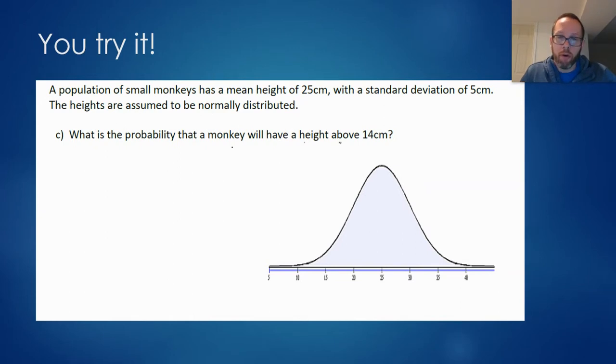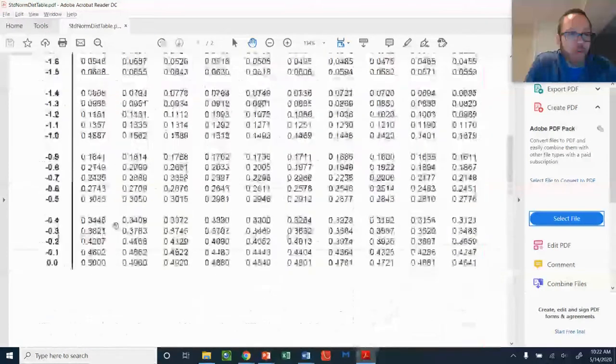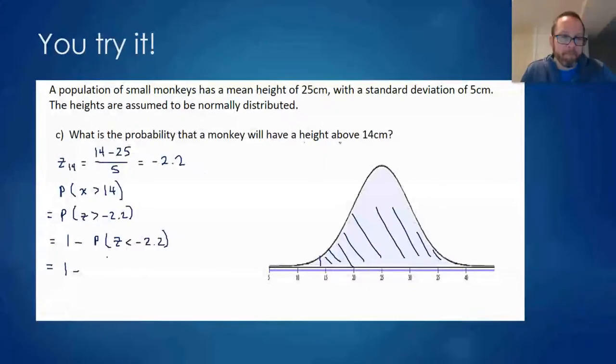A greater than question. So we're doing 14. So 14 is here, greater than, so we're expecting to get a pretty large answer, maybe even more than 90%. We'll see. Z score for 14. 14 minus 25 over 5. That's negative 11 divided by 5. That's negative 2.2. Probability that our height, our variable is above 14 is the same as the probability that our Z score is above negative 2.2. And remember, we get greater than probabilities by taking one and subtracting what the table gives us, the less than probability. And let's look this up. So 2.2 negative 0.0139. And 1 minus 0.0139, 0.9861. Or 98.61%.